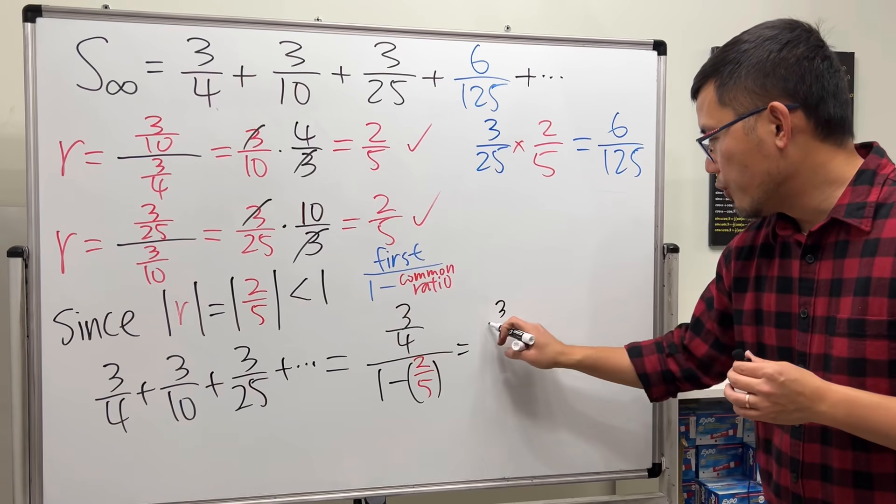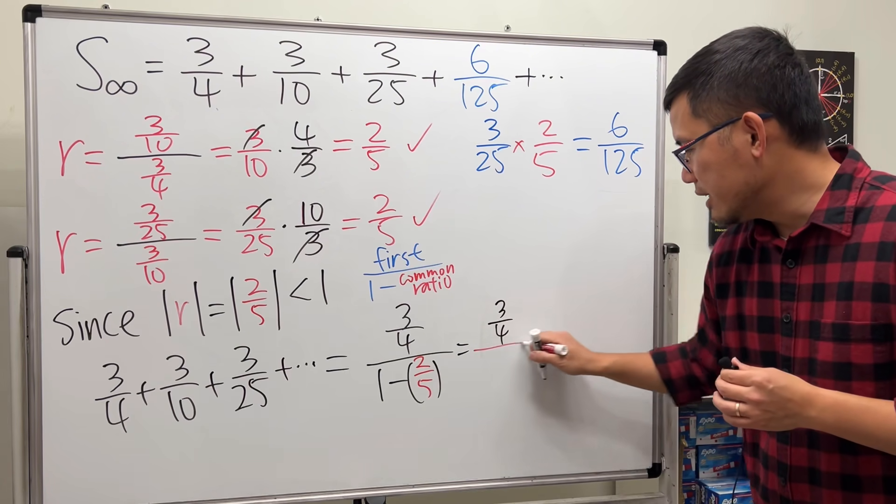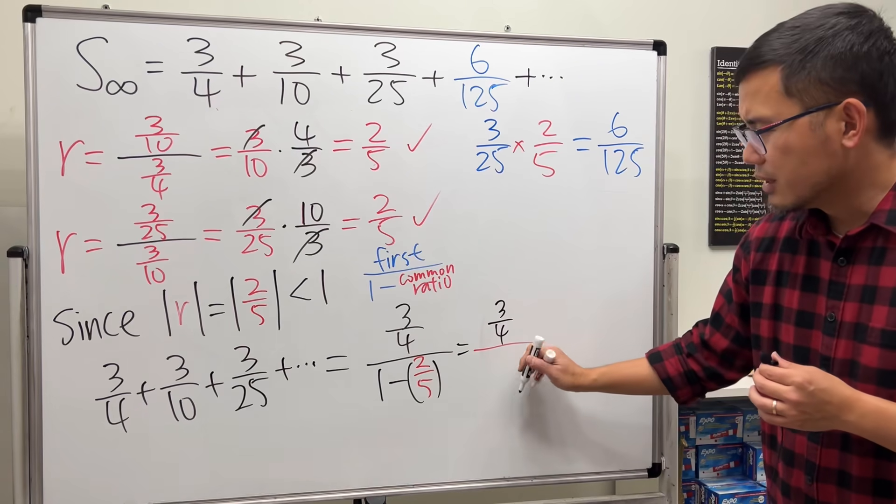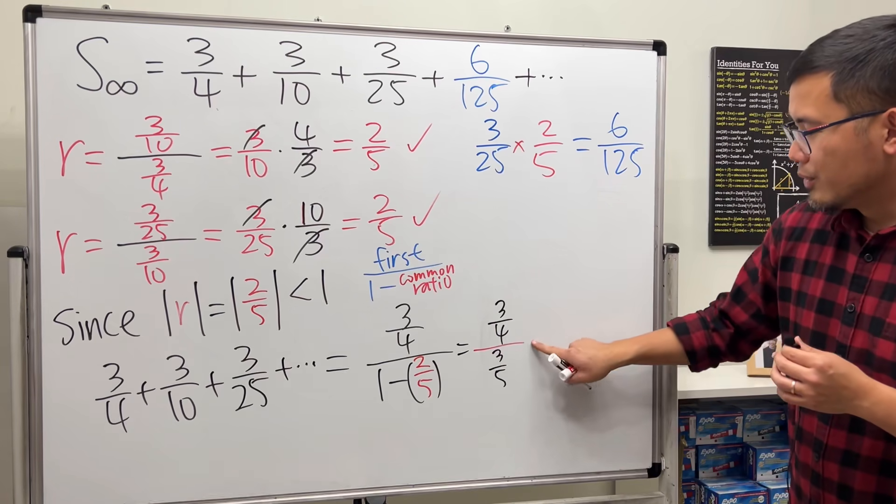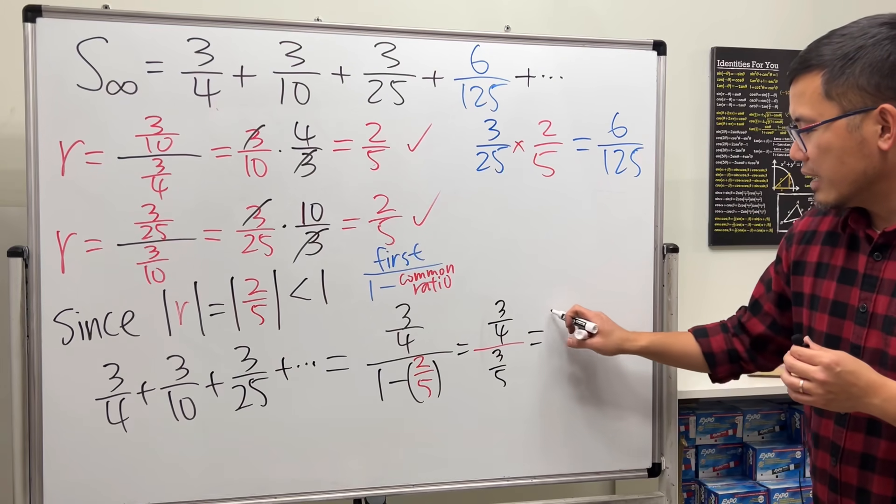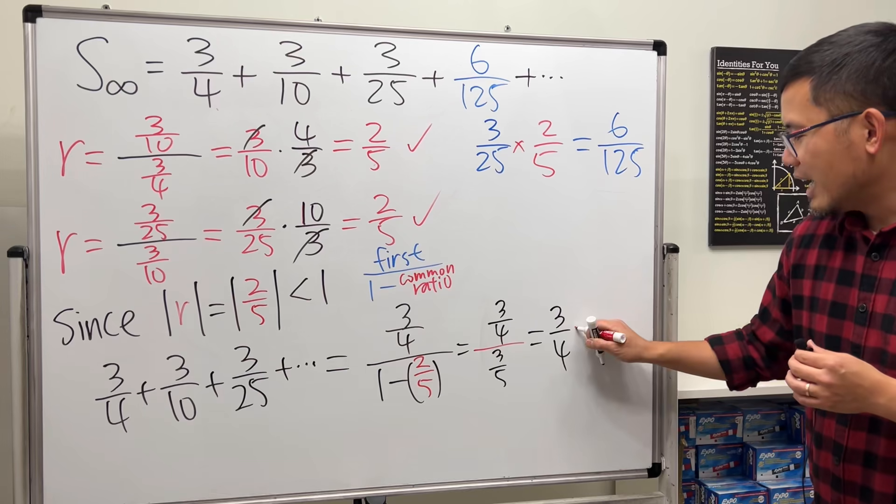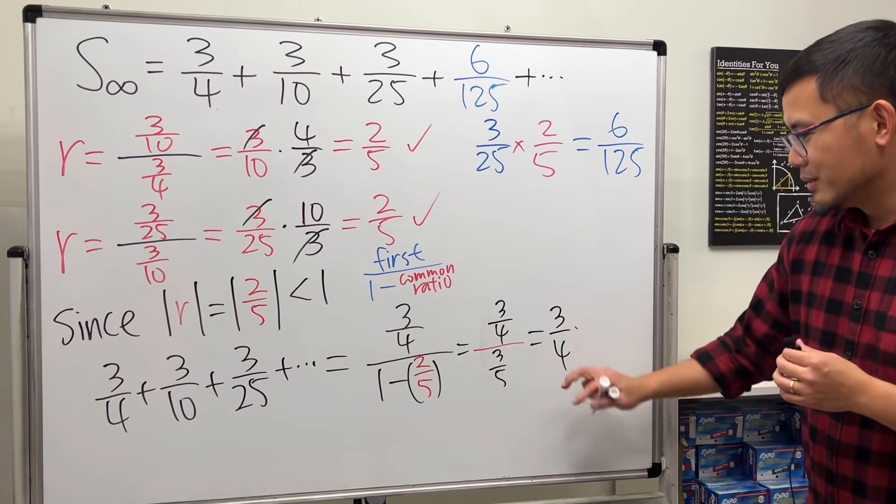On the top is 3 over 4, and then we are dividing by the bottom, which is 3 over 5. Then do the thing that we did - take that 3 over 4 times the reciprocal of this, which we have 5 on the top, 3 on the bottom.